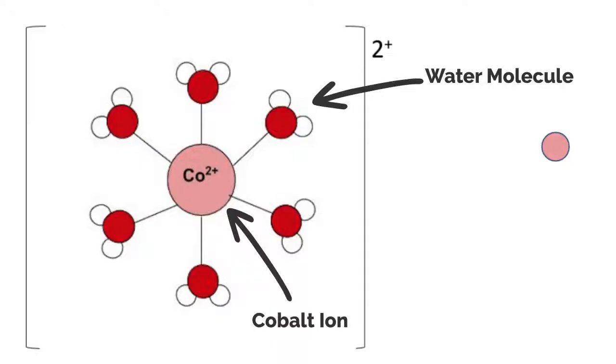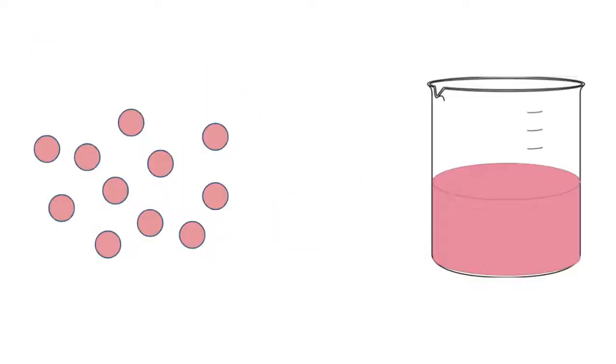When cobalt ions are surrounded by water molecules, the particle appears pink. If there are many ions present, the color we see is pink.